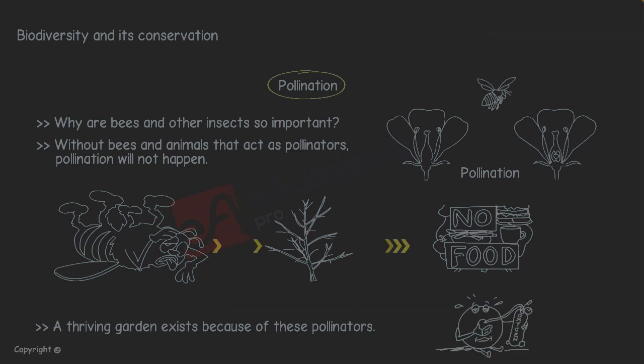If bees and insects die, no one will be able to pollinate plants, and we will lose our source of food and oxygen.